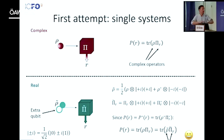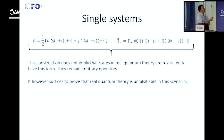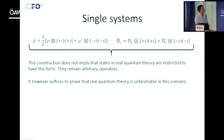The real physicist can look for arbitrary operators in real quantum theory of arbitrary dimension. There won't be an experiment falsifying real quantum theory because the real physicist can always provide an explanation — it might be weird, but it's a valid explanation using real quantum theory. I don't think there is anything fundamental in this real model. It's just a way of reproducing the numbers. I'm not saying all states in real quantum theory have to have this form. They are arbitrary real operators.